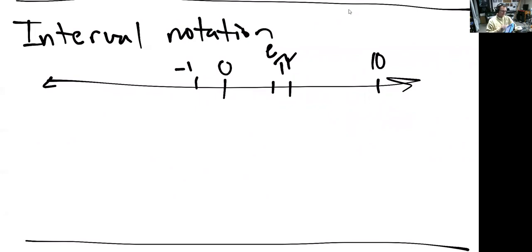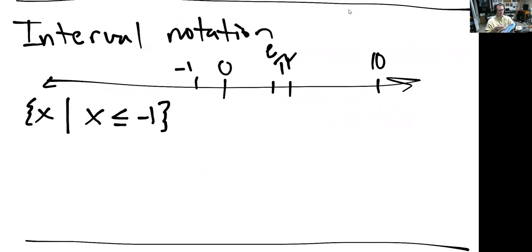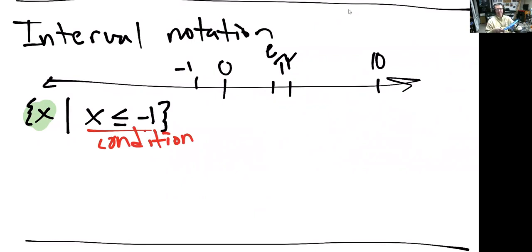So if I wanted to say the set of all numbers x such that x is less than or equal to negative 1, this is called set builder notation. I'm describing the numbers x that satisfy this condition. On the number line, that's everything from negative 1 and to the left, including negative 1, because negative 1 is less than or equal to negative 1.